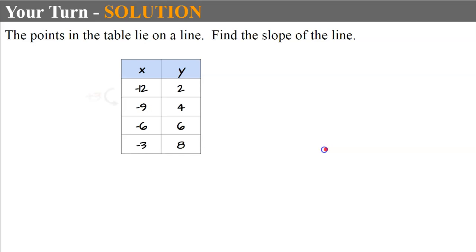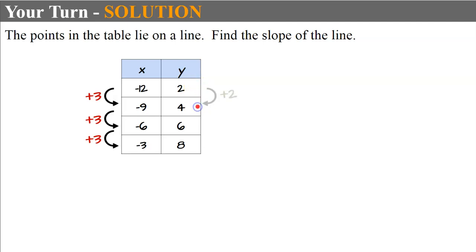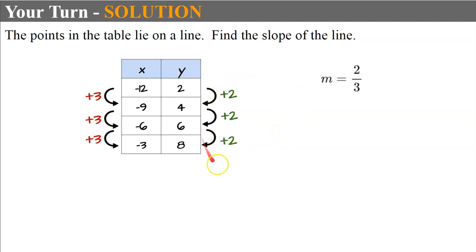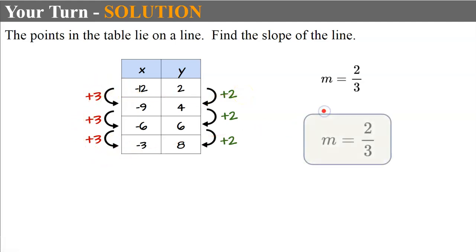Welcome back. Our x is changing by an increase of 3, and y is increasing by 2 each time. So our slope is the ratio of our change in y over our change in x: 2 over 3. Our slope is two-thirds.